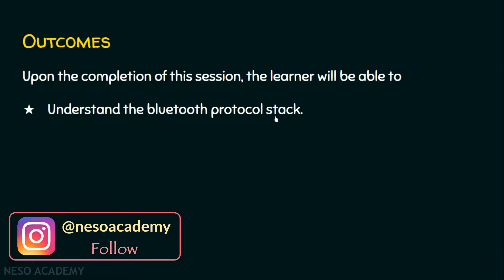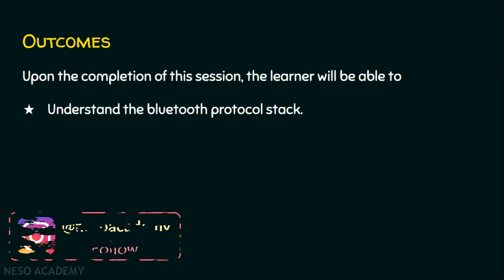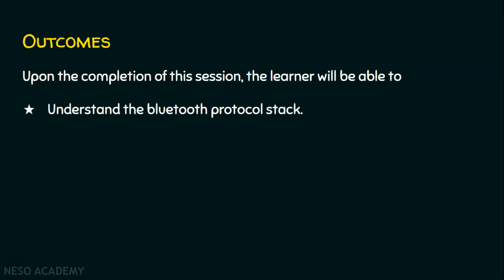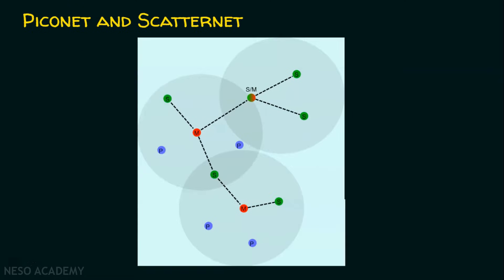In today's session, we are exclusively focusing on the Bluetooth protocol stack. Before we go into the Bluetooth protocol stack, let's revisit the Piconet and the Scatternet. The basic network configuration in Bluetooth is the Piconet, where we can have a master node which can cater up to seven slave nodes. A group of Piconets is called the Scatternet, where a master in one Piconet can be a slave in another Piconet.